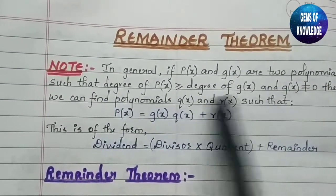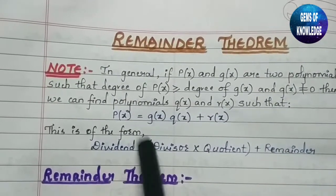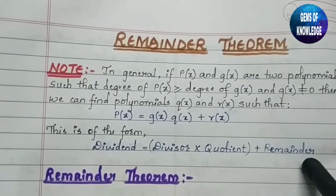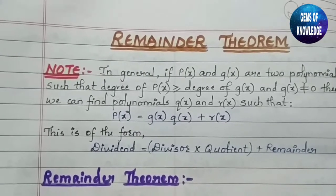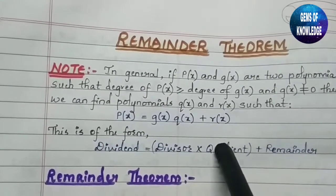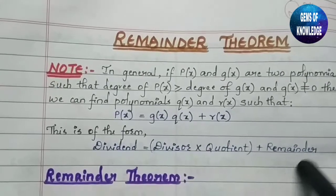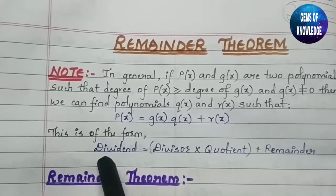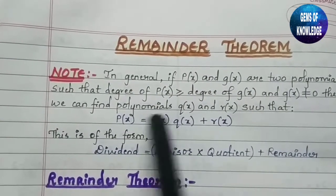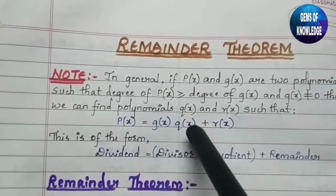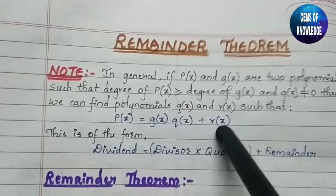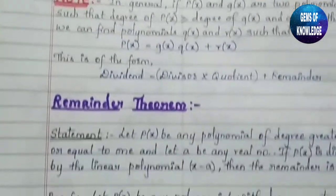This is in the form of what we studied in previous classes: dividend = divisor × quotient + remainder. When we multiply the divisor by the quotient and add the remainder, we get the dividend. So in this formula, p(x) = g(x)·q(x) + r(x), where r(x) is the remainder. Now we shall move on to the Remainder Theorem.